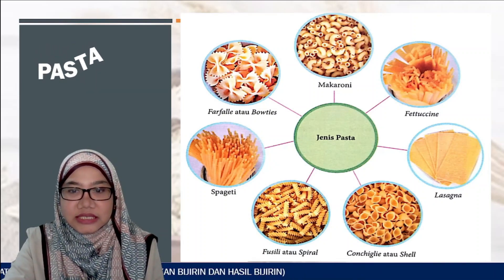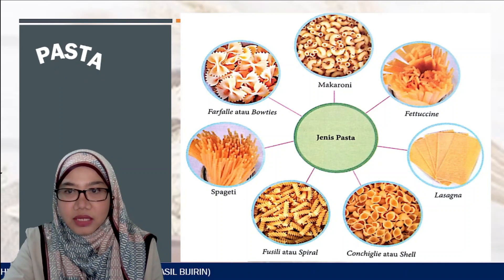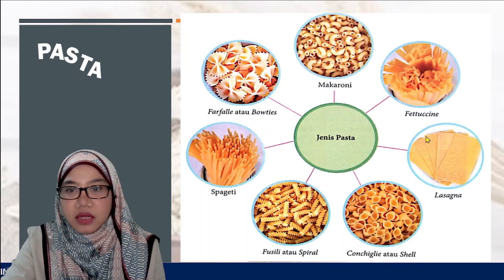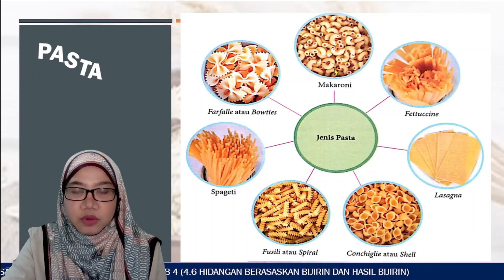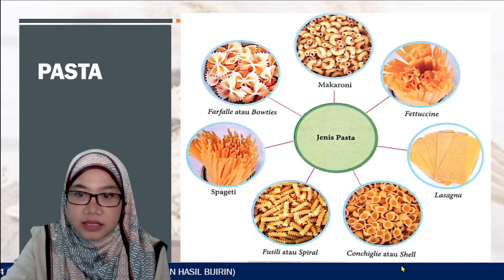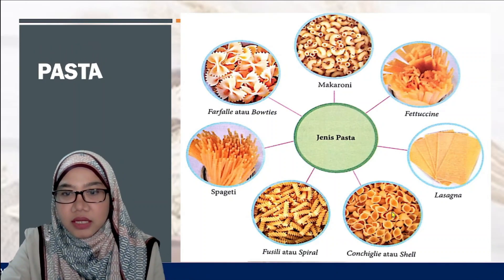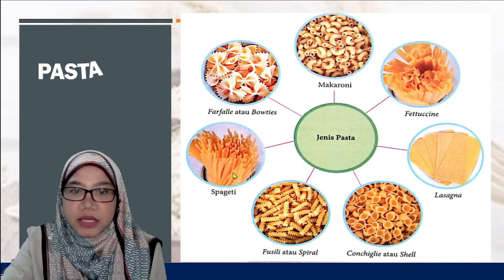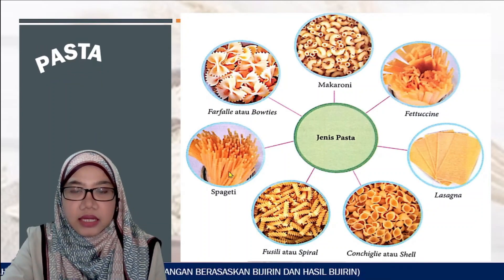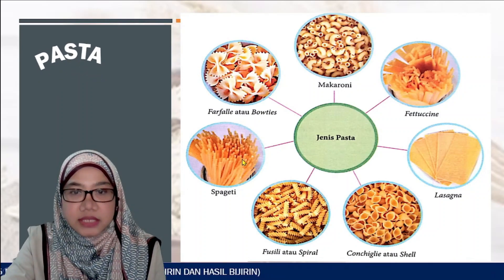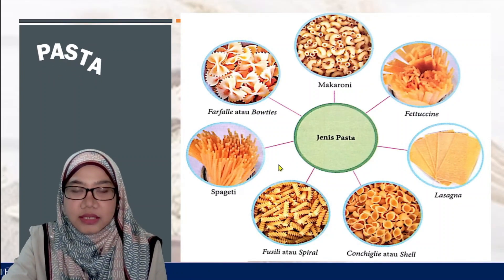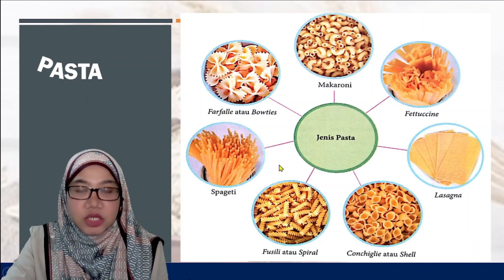Terdapat tujuh jenis pasta mengikut rupa bentuk. Nama pasta diberikan mengikut bentuknya: pertama kita ada macaroni, fettuccine, shell (berbentuk seperti kulit kerang), spiral fusilli, spaghetti, dan bentuk seperti rama-rama. Pasta boleh dimasak mengikut resepi-resepi masyarakat Eropah, mengikut kesesuaian dan kreativiti seseorang.